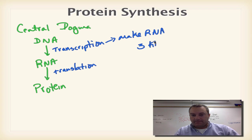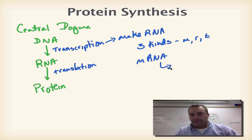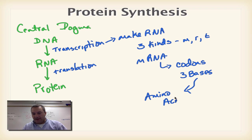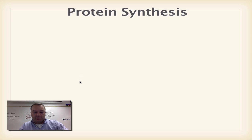When we talk about RNA, remember there are three kinds: mRNA, rRNA, and tRNA. When we're talking about mRNA, we have to remember that we have things called codons. Codons are three bases in a row, and each set of three bases together is going to code for one amino acid. And remember, amino acids are the monomers of a protein. So that sets us up for where we're at right now.